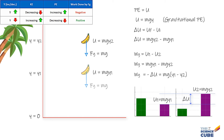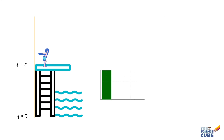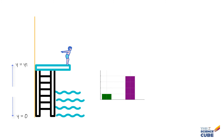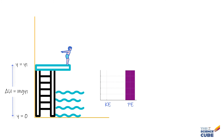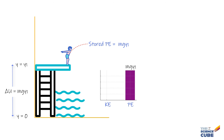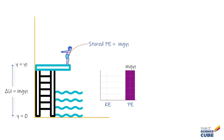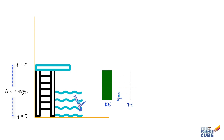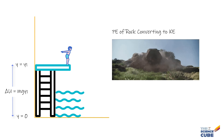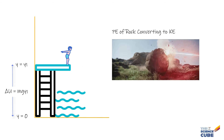The answer is simply because when an object possesses this energy, it has the potential to do something. For example, if a diver climbs up to the diving board, he has increased his potential energy — this energy is now stored and does nothing while he continues standing on the board, but he has the potential to convert this energy into kinetic energy whenever he decides to jump.